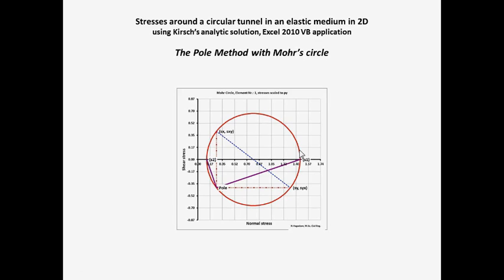The pole is a special point on Mohr's circle. Any straight line drawn from the pole intersects Mohr's circle at a point which gives the stress state sigma, tau acting at the plane inclined parallel to that line.